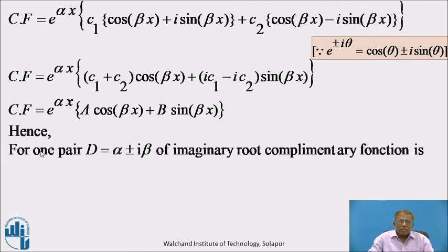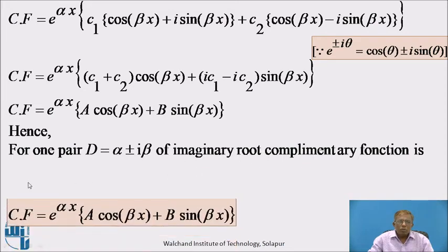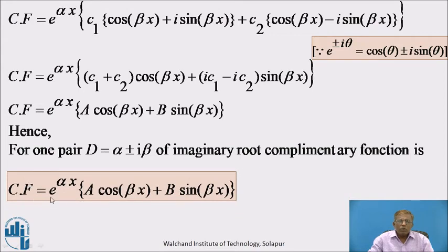Hence, for one pair d = α ± iβ of imaginary roots, the complementary function can be written as CF = e^(αx)(A cos βx + B sin βx), where A and B are arbitrary constants. Treat this as the formula for CF for one pair of imaginary roots.